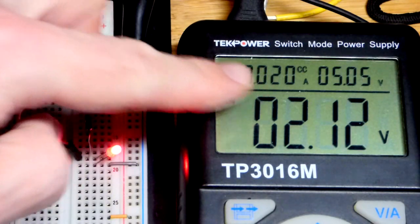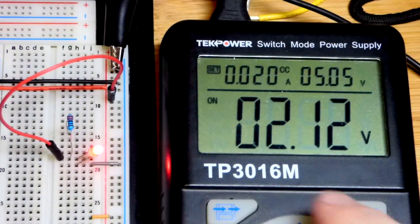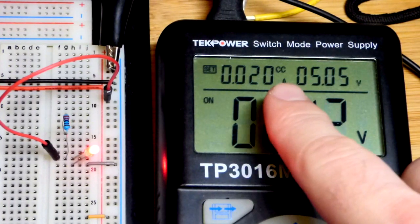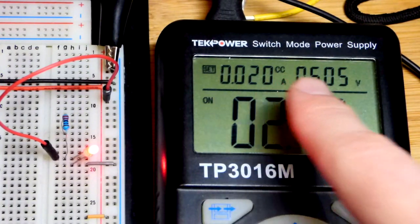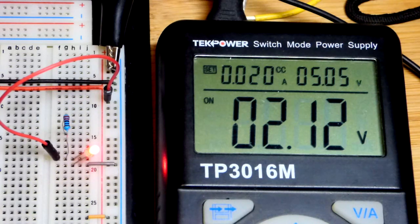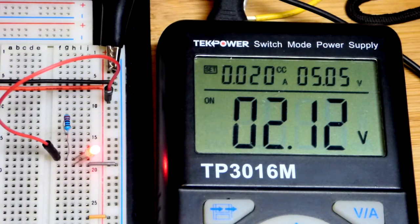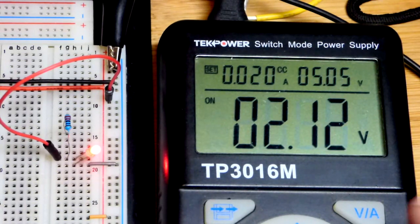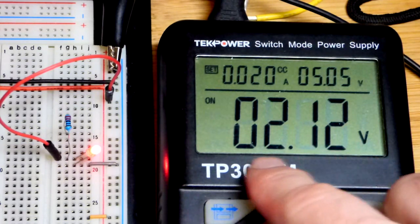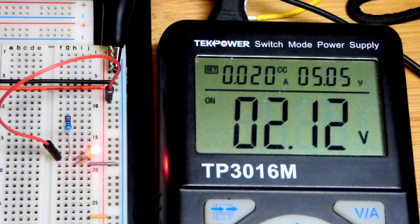And you can see there that it's the power supply here that is limiting current. That's why it says CC, it's constant current. It's holding that current steady because the circuit is trying to get more. And that's what it's limiting to. And the way that it's doing so, you can see how low it dropped the voltage right there.